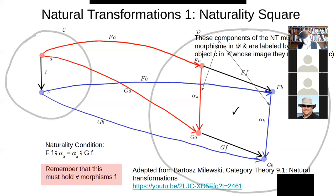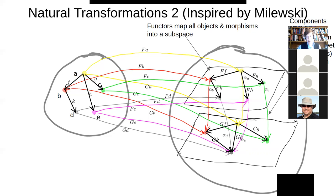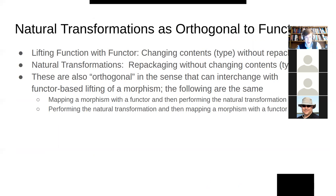This can't be just any arbitrary functor or any arbitrary category D. There's some sort of compatibility required here. Natural transformations are directional — they go from functor F to G. Just because there's a natural transformation from F to G doesn't mean there's one from G to F. G might be more coarse-grained than F, collapsing things that are distinguished in F.